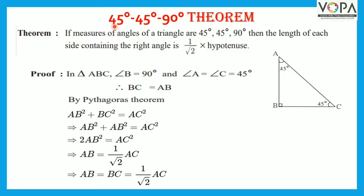45-45-90 degree theorem statement: If the measures of angles of a triangle are 45 degrees, 45 degrees, and 90 degrees, then the length of each side containing the right angle is 1 upon root 2 times the hypotenuse.